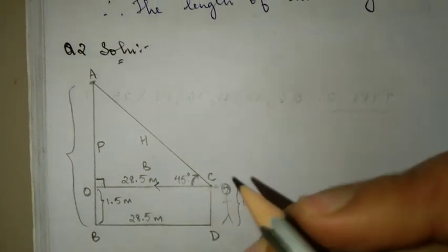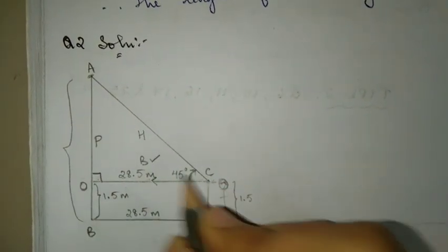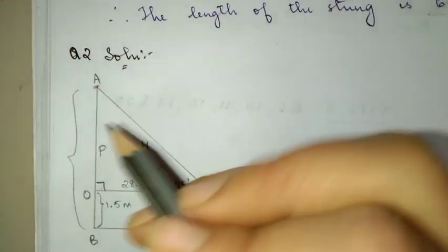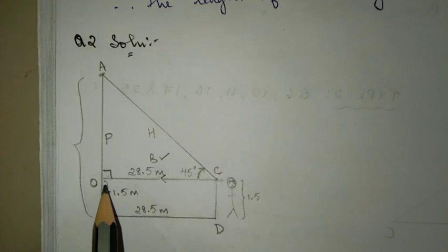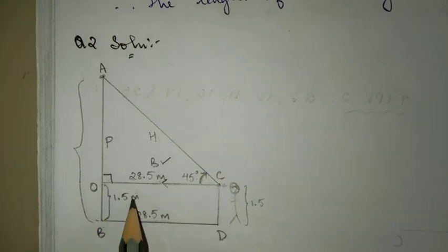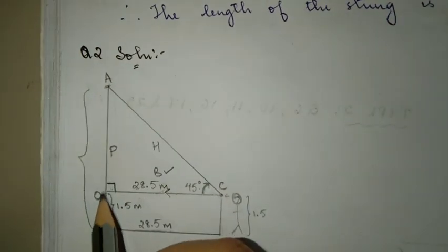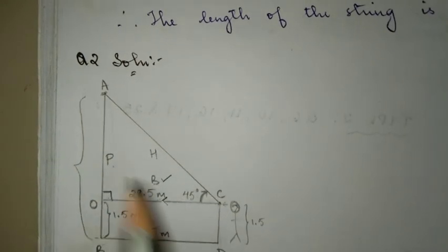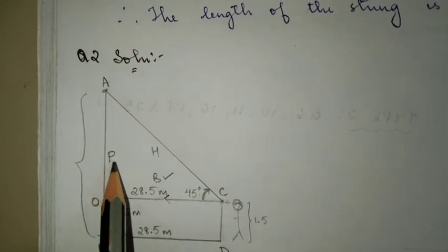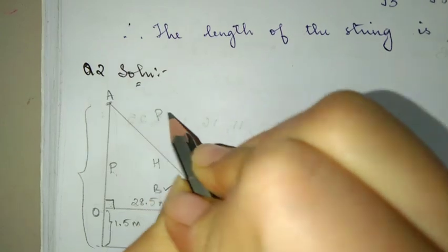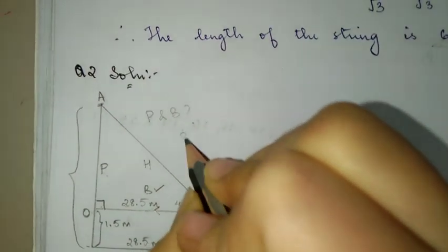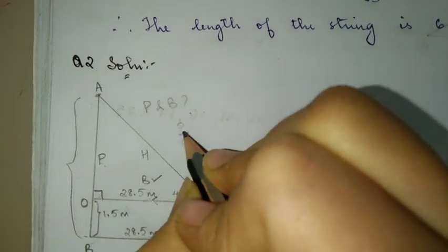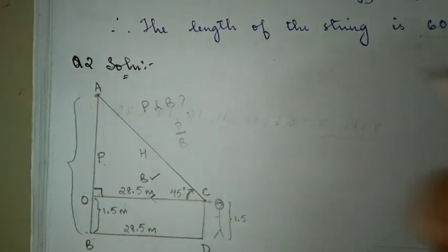Now we know base is 28.5 and they are asking us to find the total height of the chimney. We already know this much, we have to find out the remaining height. This is P. So what formula uses P and B? Tan theta. Tan theta is P by B.